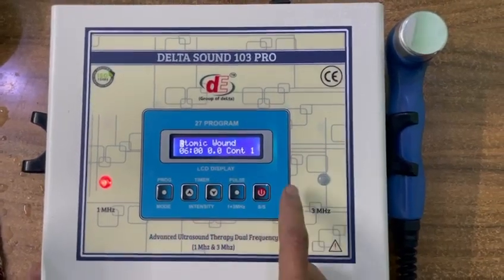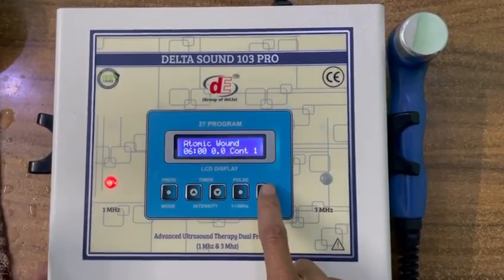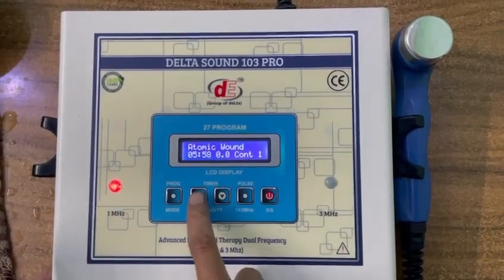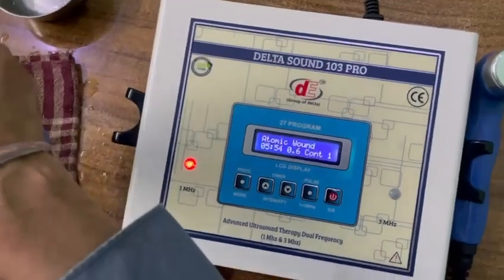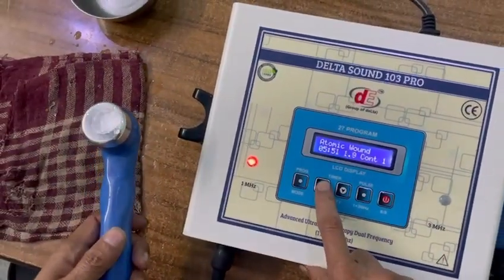Now press start button and increase the intensity. Now it is working automatic pulse in program. It is working in program mode.